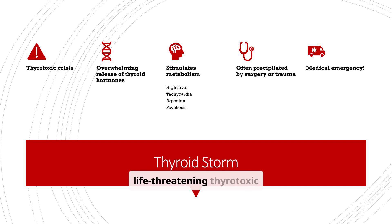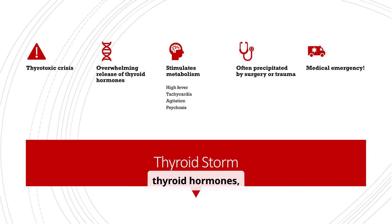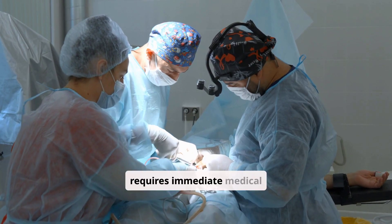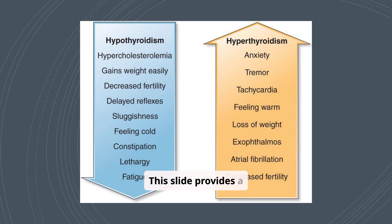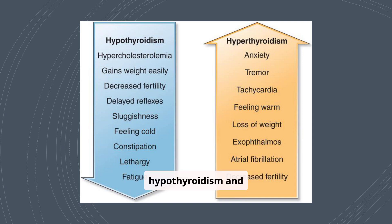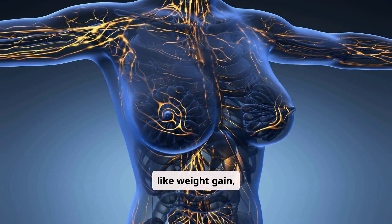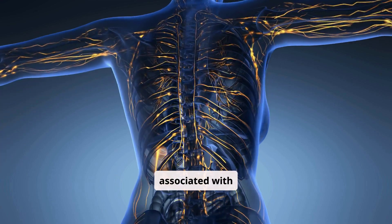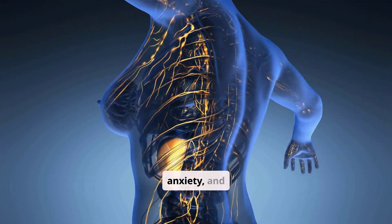Thyroid storm is a life-threatening thyrotoxic crisis involving an overwhelming release of thyroid hormones, leading to high fever, tachycardia, agitation, and psychosis. It is often precipitated by surgery or trauma and requires immediate medical attention. This slide provides a helpful comparison of hypothyroidism and hyperthyroidism: hypothyroidism is associated with weight gain, fatigue, and feeling cold, while hyperthyroidism is associated with weight loss, anxiety, and feeling warm.